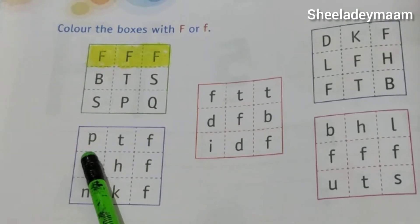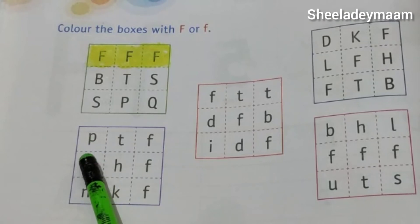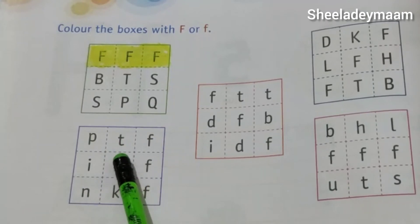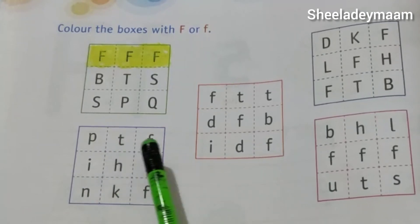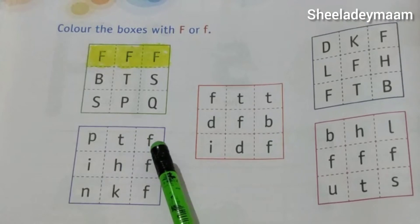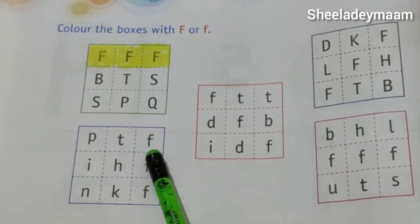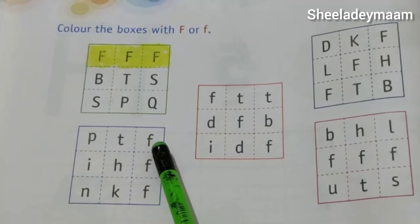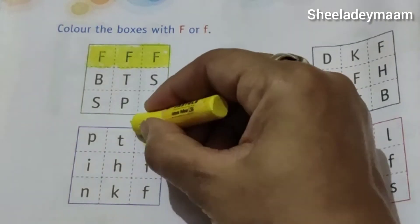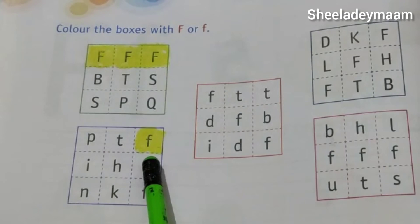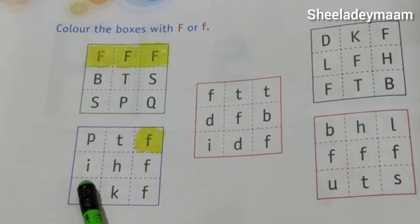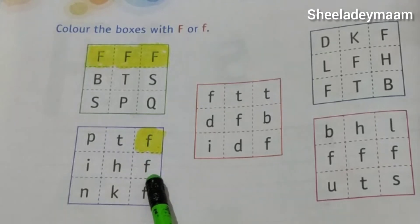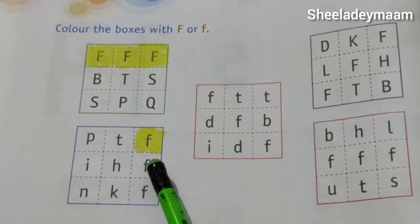Now tell me children which letter is this? This is letter P — this is lower case P. And this is letter T — this is lower case T. And which letter is this? Yes children, you are correct — this is lower case F. Now we have to color this box. Our next letter is: this is letter I, and this is letter H. Now tell me which letter is this? Yes children, this is letter F. So we have to color this box.